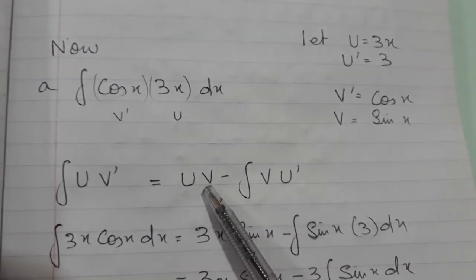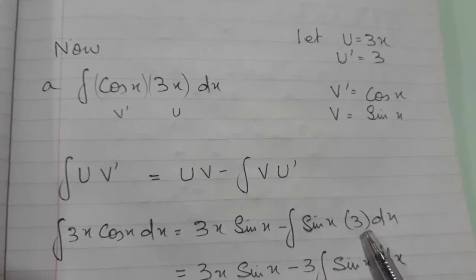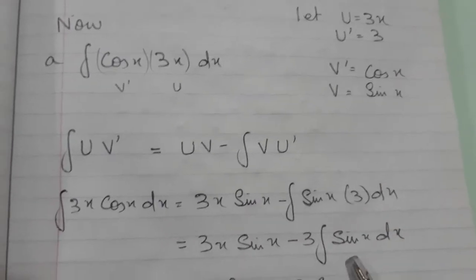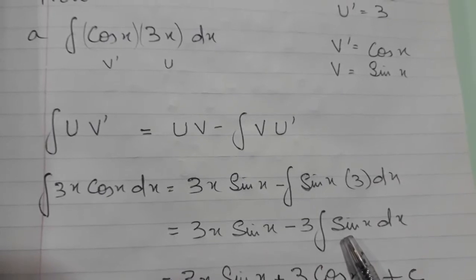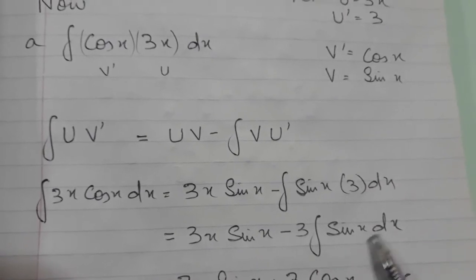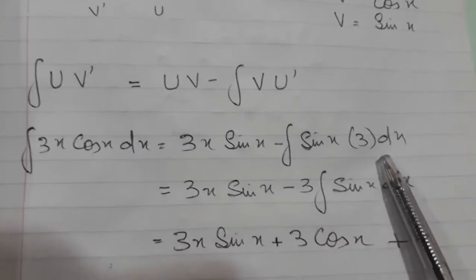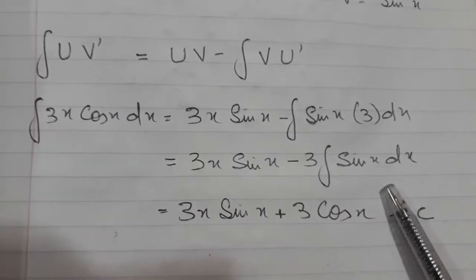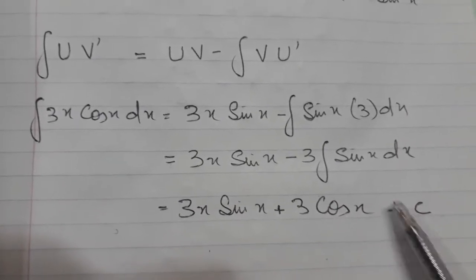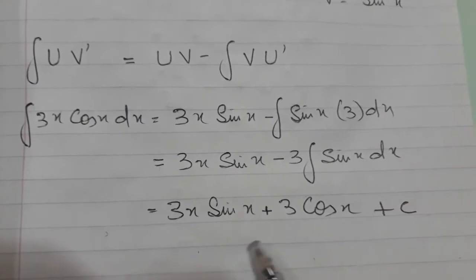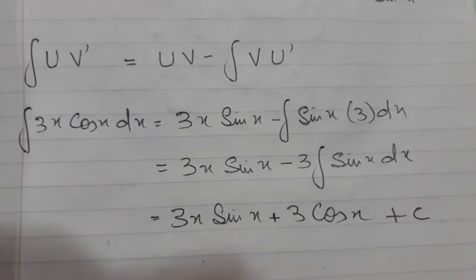So now I will simply plug in these values into the formula, substituting u, v, v, and u'. Now I came up with this — it has become very simple. We all know how to integrate this. So I integrate it and this is what I have gotten at the end. This is how I applied integration by parts and gotten this answer.